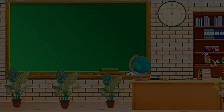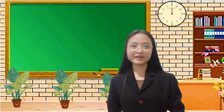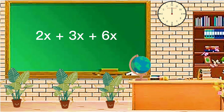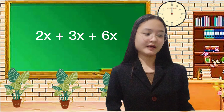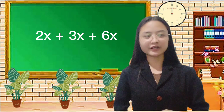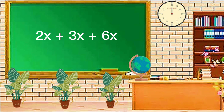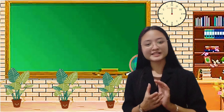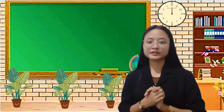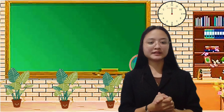Okay class, I have an equation here. Can you please read it? 2x plus 3x plus 6x. Is there anyone here in class who can solve the given equation on the board? 2x plus 3x plus 6x is equal to 11x. That's correct. How did you solve for it? In adding polynomials or algebraic expression, we just need to add the numerical coefficient and copy the variable.